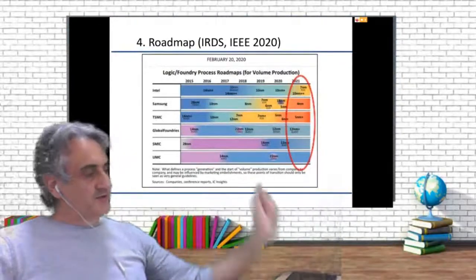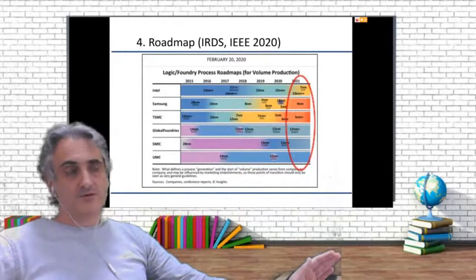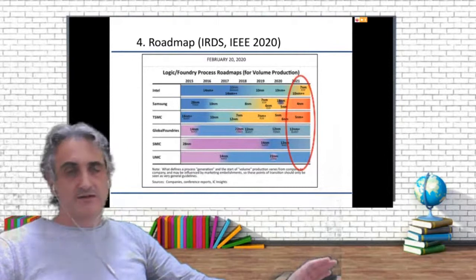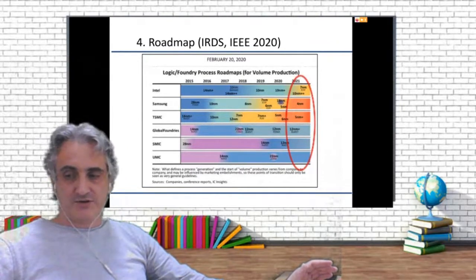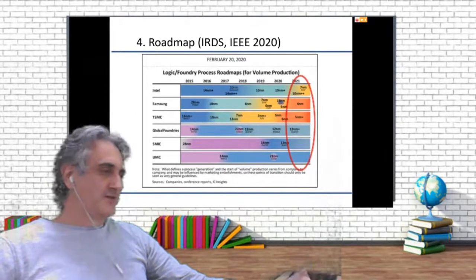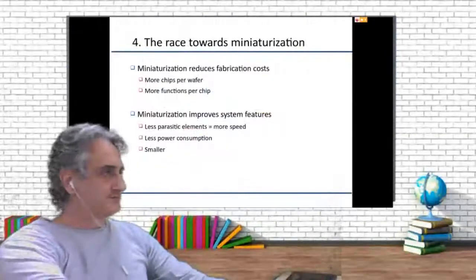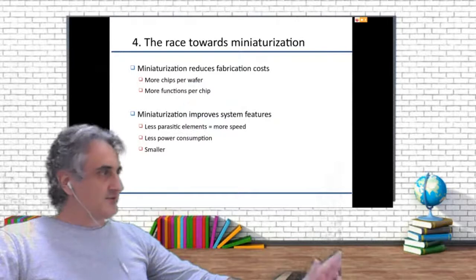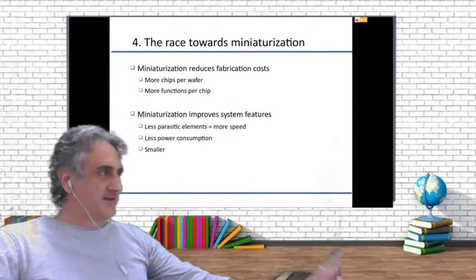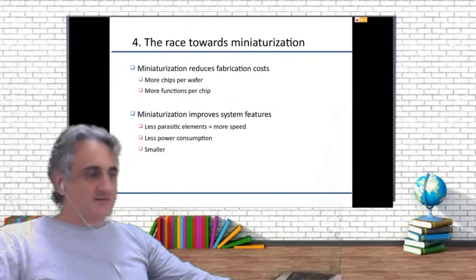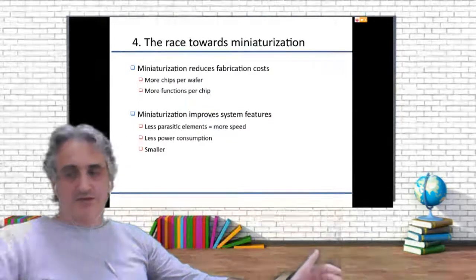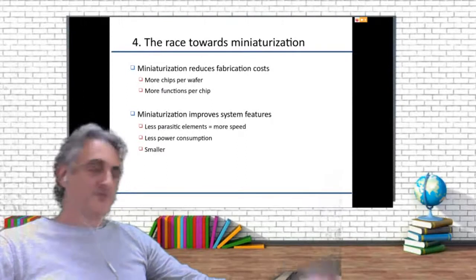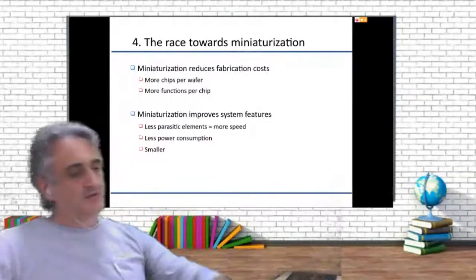This roadmap is for logic circuits or analog circuits whenever you need to integrate functions. When you get to smaller circuits, you get fewer parasitic elements, more speed, and less power dissipation. But you get a maximum power you can control because your elements are so small they cannot dissipate more than a maximum power. So you keep with older technologies.